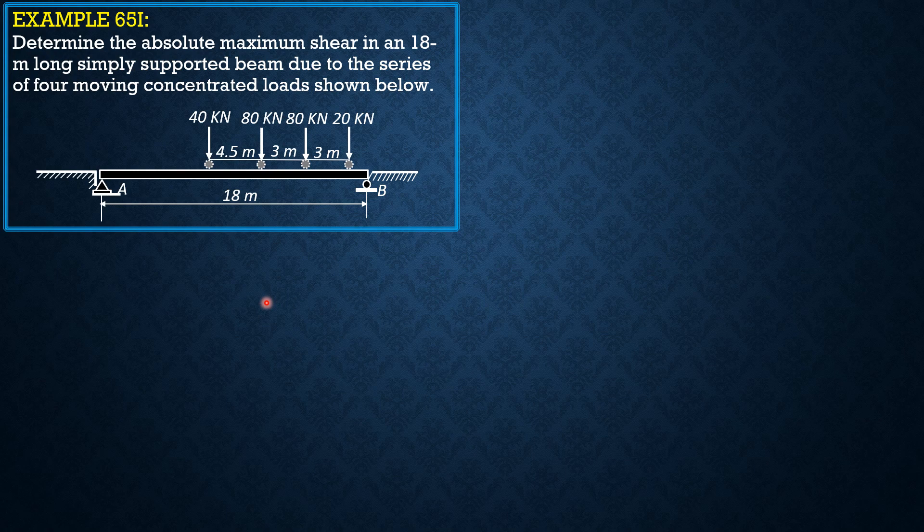The criterion for shear or reaction is W·h/L minus P₁. Where our P₁ would be 40 because we move all these loads where this first 80 kilonewton load will be over A. That is P₁, and h is 4.5, L is 18. So let's evaluate W.